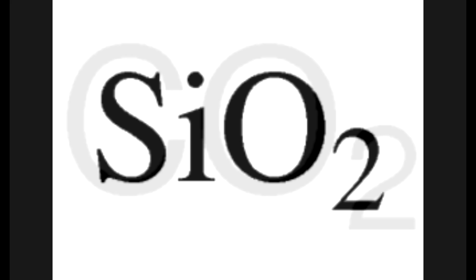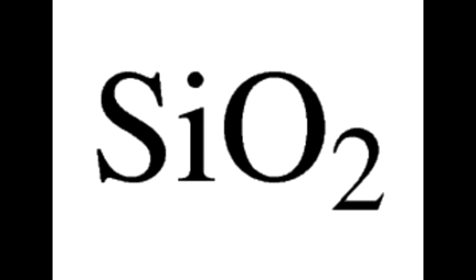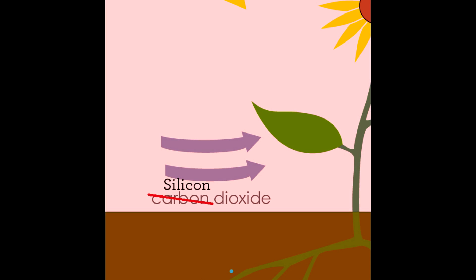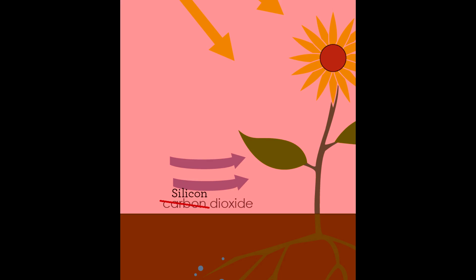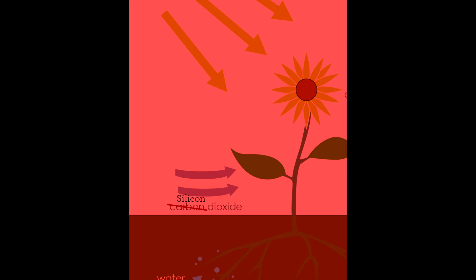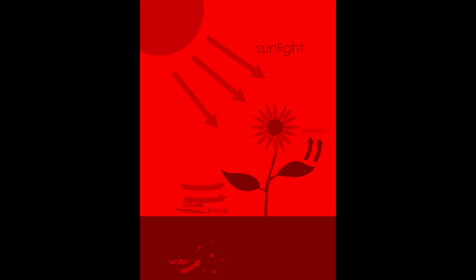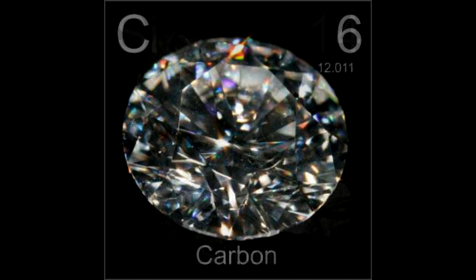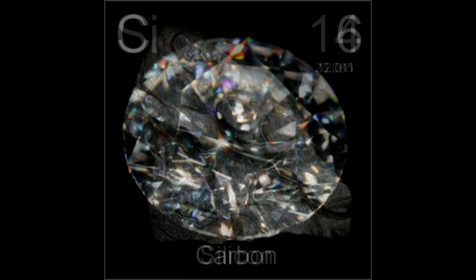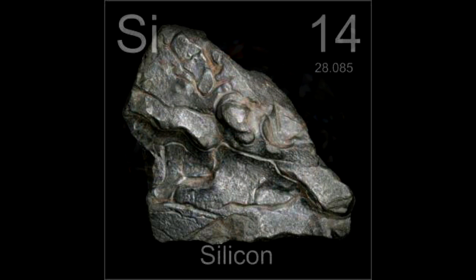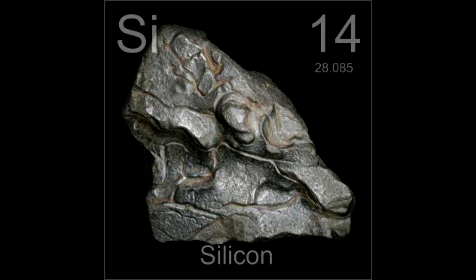Silicon dioxide is a much stronger molecule than carbon dioxide. Photosynthesis based upon silicon dioxide would be nearly impossible for plants to harvest their energy from. Clearly, silicon-based life will not be as simple as just replacing the carbon atoms with silicon atoms.